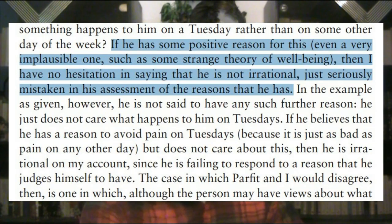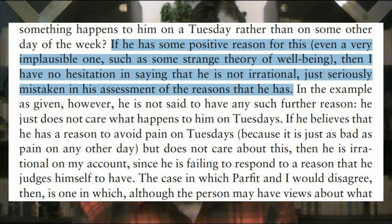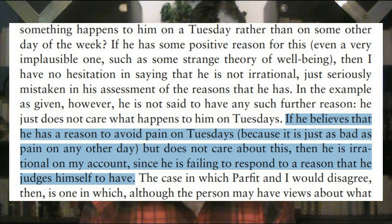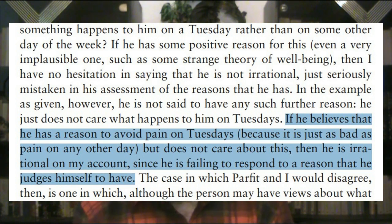What needs to happen for this man to be irrational according to Scanlon is something else. Scanlon says: 'If he has some positive reason for this, even a very implausible one, such as some strange theory of well-being, then I have no hesitation in saying that he is not irrational, just seriously mistaken in his assessment of the reason that he has. If he believes that he has reason to avoid pain on Tuesdays because it is just as bad as pain on any other day, but does not care about this, then he is irrational on my account, since he is failing to respond to a reason that he judges himself to have.' So Scanlon agrees with Parfit about the parallel between irrationality and wickedness, but not how Parfit defines irrationality, because it confuses someone who is mistaken with someone who is irrational.